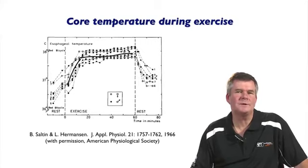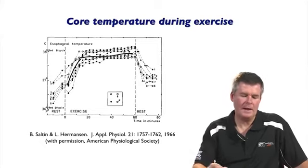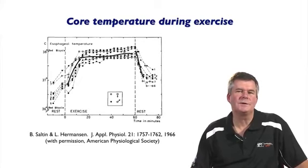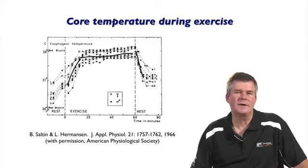As exercise continues and metabolic heat production is maintained or increased, and the ability to dissipate that heat, the core temperature may drift upwards slightly. After exercise finishes, you can see a rapid drop in body temperature. The most important determinant of core temperature during exercise is the rate of metabolic heat production — i.e., how hard the exercise is, or the exercise intensity.